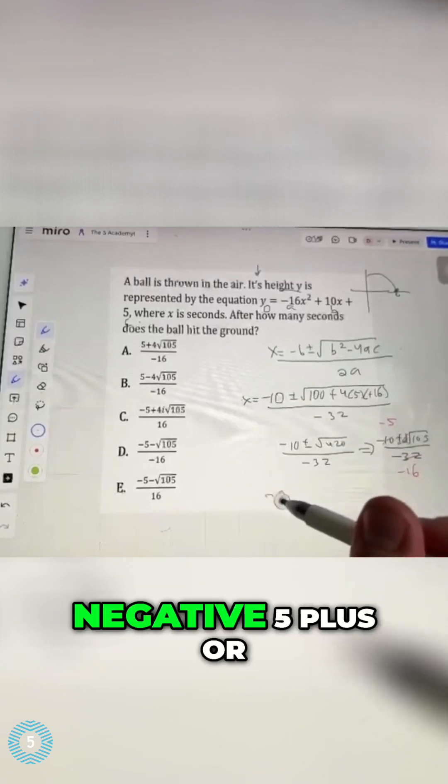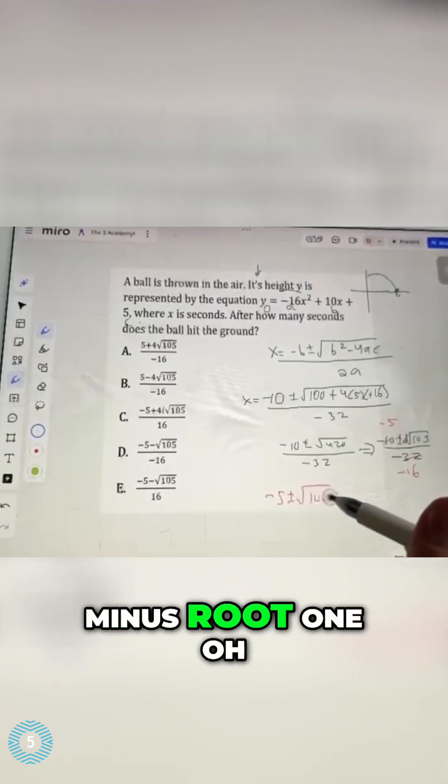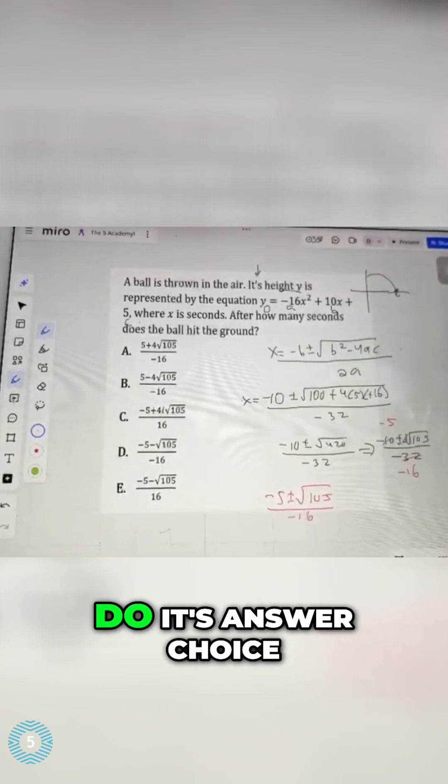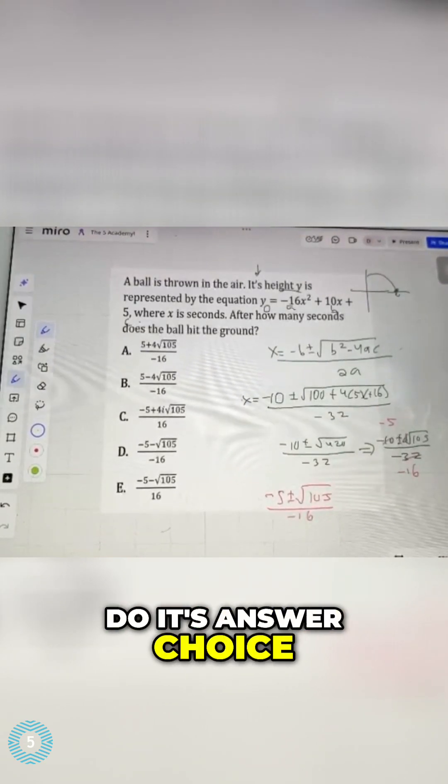So my final answer, negative 5, plus or minus root 105 all over negative 16. Do I have an answer choice that looks like that? I do. It's answer choice.